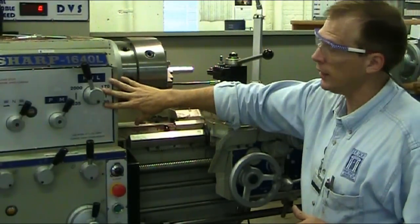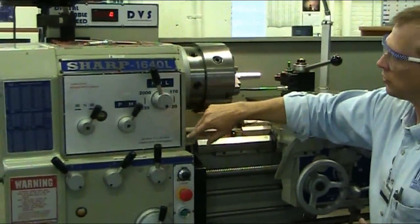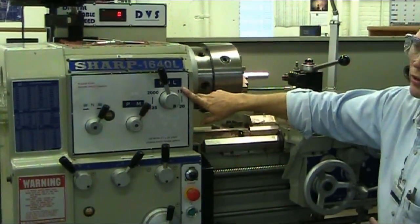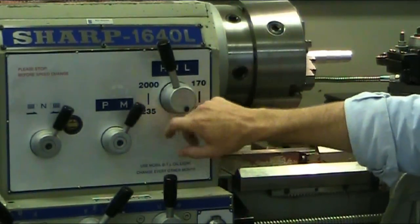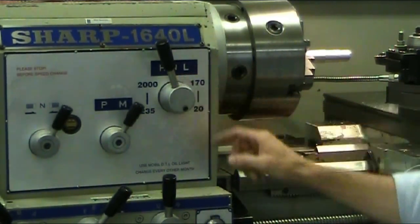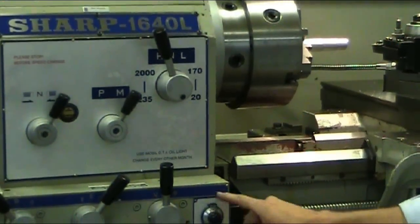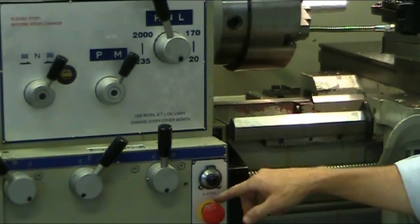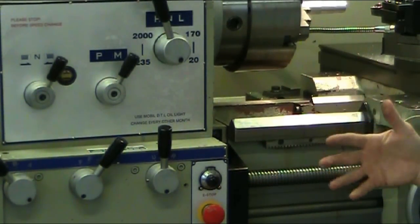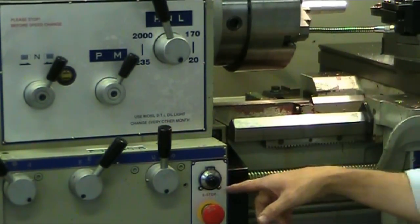Let's talk about the speed a little bit. You have two ranges. You have a low range which is from 20 to 170, and a high range from 235 to 2,000. You also have this range selector. It's from 0 to 10, so it's like on a percentage scale, from 0 to 100%. You set this at 10, it's going to go around 2,000 RPMs.